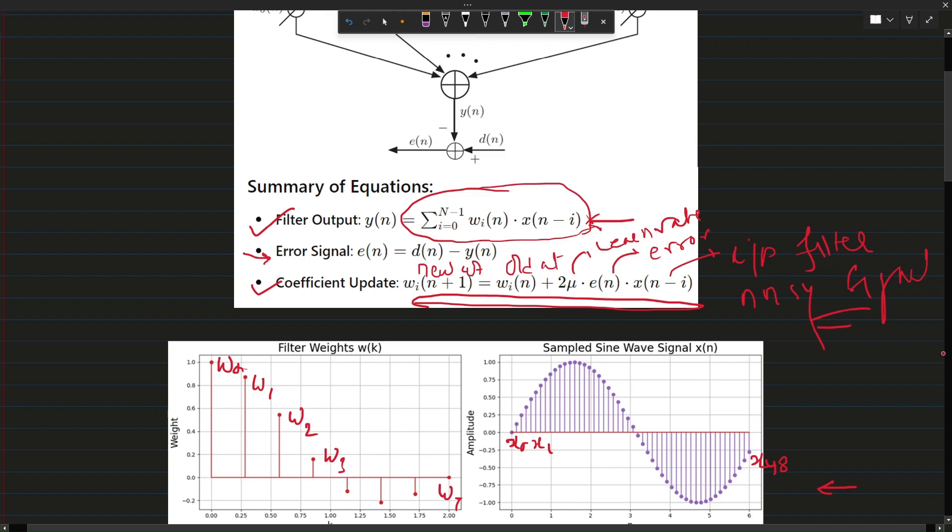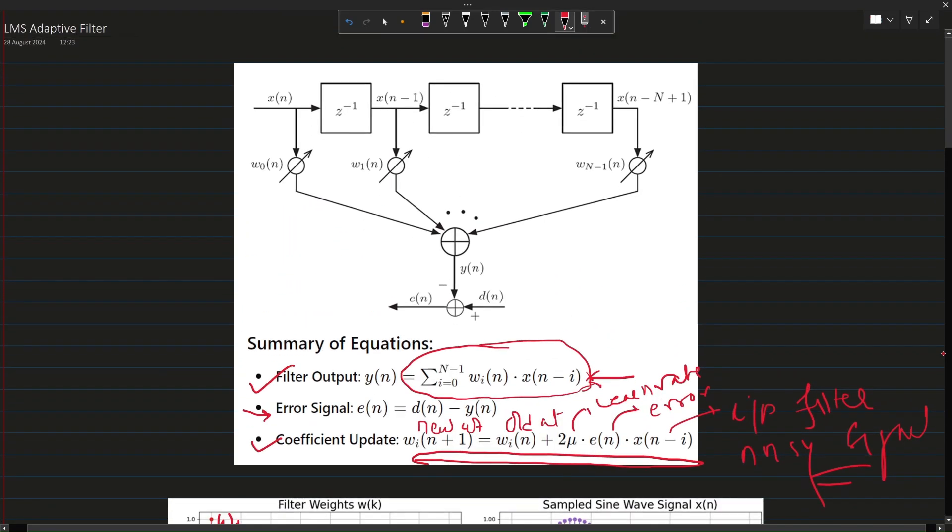I hope now you are clear as to how this whole algorithm is working. Once these weights are updated, in one iteration all these weights are updated, then this whole cycle is repeated, then again this entire set of weights are updated in an iterative manner. We will implement this entire algorithm in python and show you how it functions.